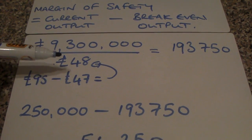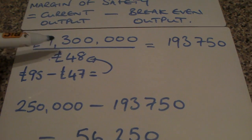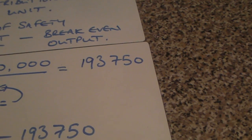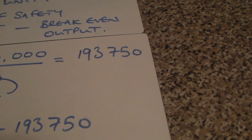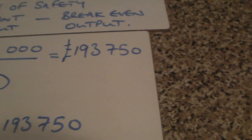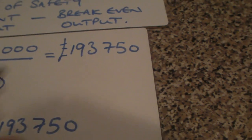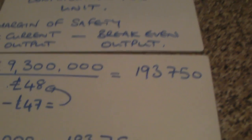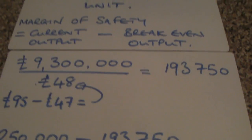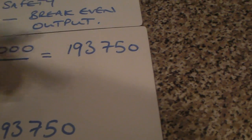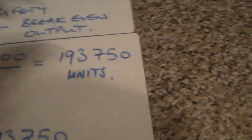We take our fixed costs of £9,300,000 and divide by the contribution per unit of £48, which gives us a breakeven output of 193,750. A common mistake is to think this is a monetary value and put a pound sign in front of it — that's incorrect. The outcome of this formula is not a monetary amount; it's a number of units of the product. So if this were an e-reader like the Kindle, the breakeven would be 193,750 Kindles.